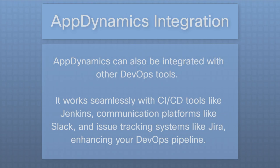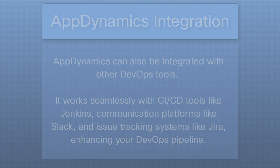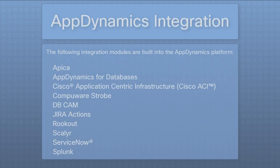AppDynamics can also be integrated with other DevOps tools. It works seamlessly with CI/CD tools like Jenkins, communication platforms like Slack, and issue tracking systems like Jira, enhancing your DevOps pipeline. In addition, the following integration modules are built into the AppDynamics platform.